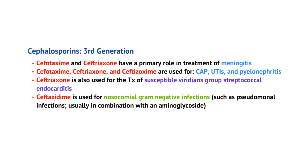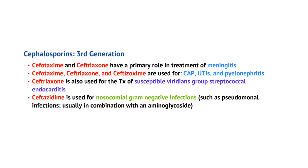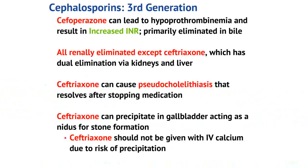Cefoperazone can lead to hypoprothrombinemia, causing an elevated INR. Cefoperazone is also eliminated via bile, so in patients with biliary obstruction, this may not be the medication you want. Most third generation cephalosporins are renally eliminated, except for ceftriaxone, which has dual elimination via the kidneys and liver. Note that ceftriaxone can also cause pseudocholelithiasis — the feeling of having a gallbladder stone — which usually stops after the medication is stopped. Because ceftriaxone is eliminated partly through the bile, it can precipitate in the gallbladder and act as a nidus for stone formation. Never give ceftriaxone with IV calcium.